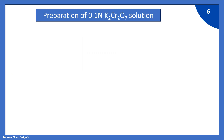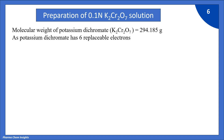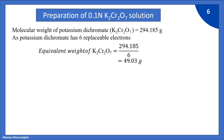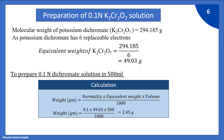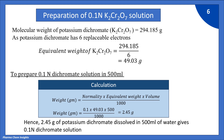Now we will see the preparation of 0.1 normal K₂Cr₂O₇ (potassium dichromate) solution. The molecular weight of potassium dichromate is 294.185 grams. Since potassium dichromate has 6 replaceable electrons, the equivalent weight is 294.185 / 6 = 49.03 grams. To prepare 0.1 normal dichromate solution in 500 ml: 0.1 × 49.03 × 500 / 1000 = 2.45 grams.